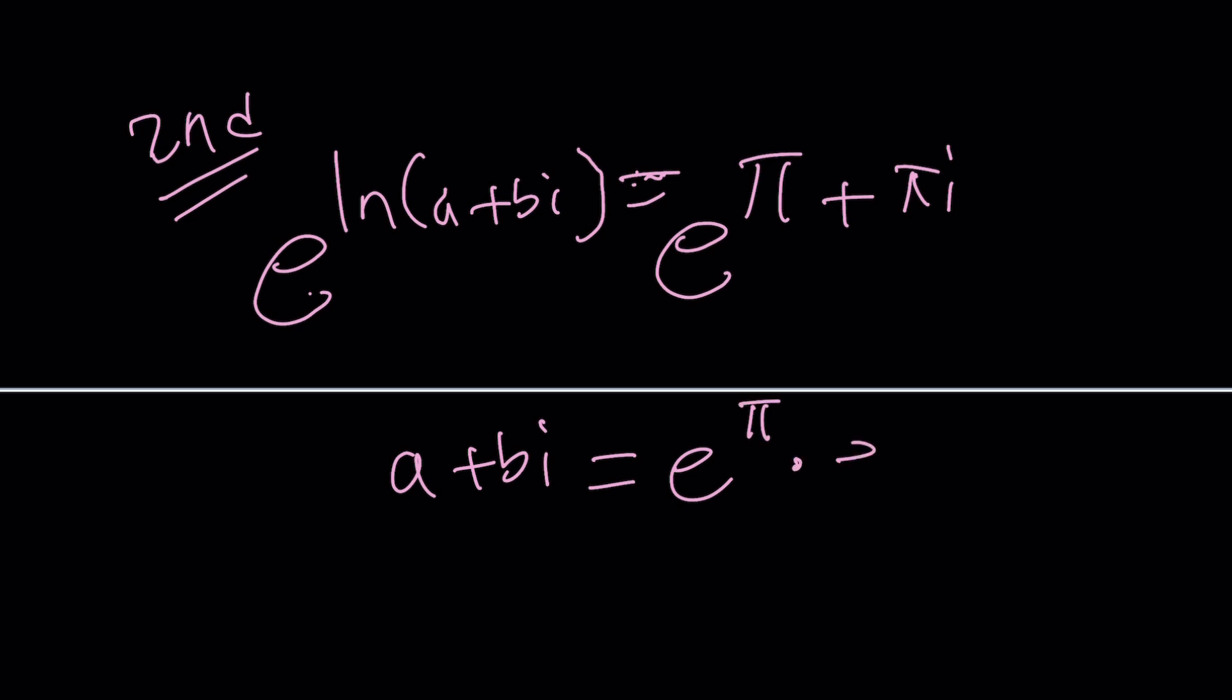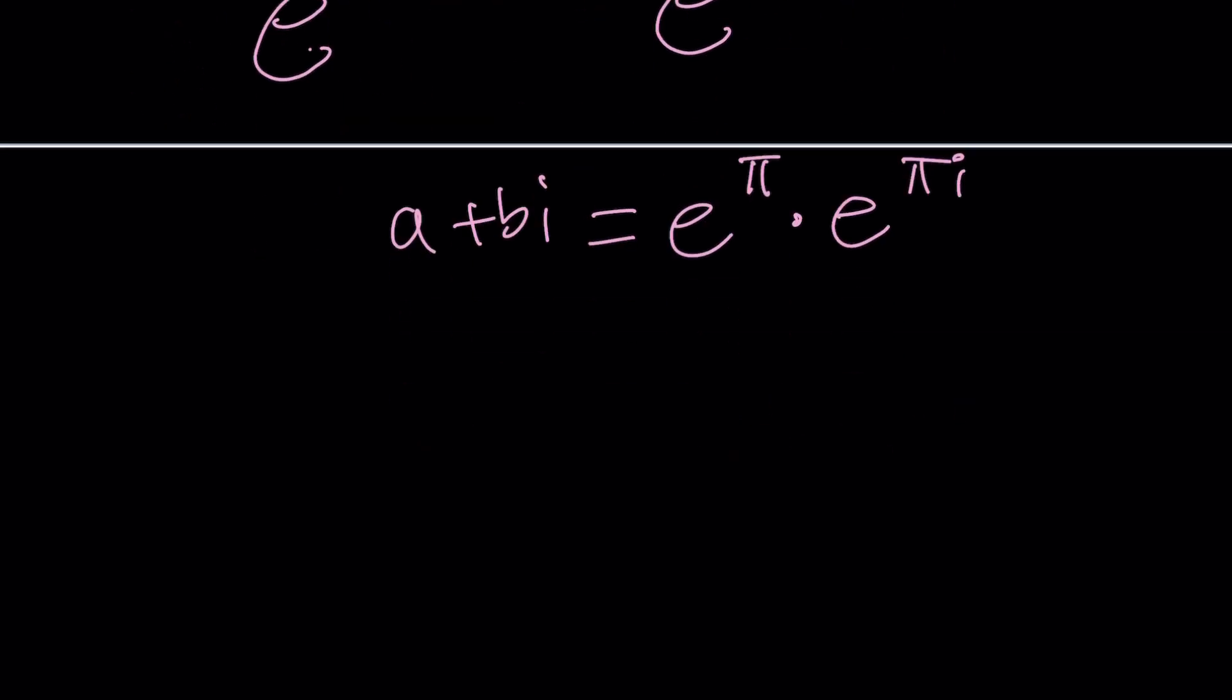Let's talk about the second method. Second method: ln(a + bi) = π + πi. So why not use E? Put both sides on e to the power. Do e to the power both sides. And then we're going to get e^ln(a + bi) is just a + bi. And then this is going to be e^π times e^πi. Uh-oh. This is just -1.